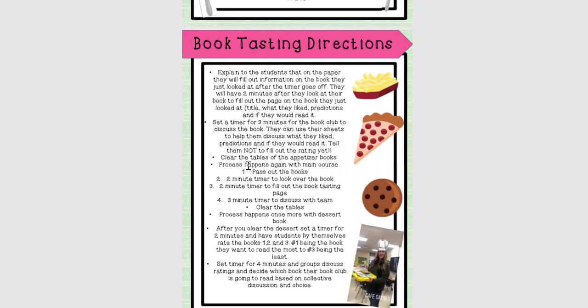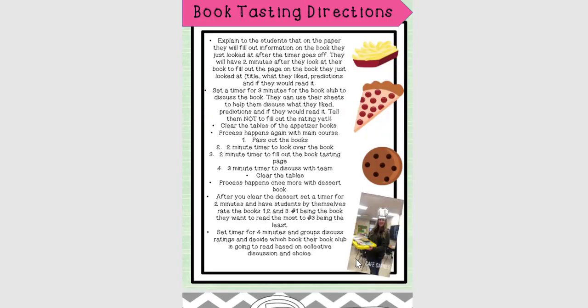Then give them time to discuss which book they'd like the best. They rate the books individually first — number one meaning they'd most like to read it, number three being least — then their group discusses and tries to collectively decide which book they want to read. You might have some sad friends in the group because they didn't get their top choice, but you can reassure them that when they finish this first book, you'll have those other books on deck and they will get a chance to read them as well.